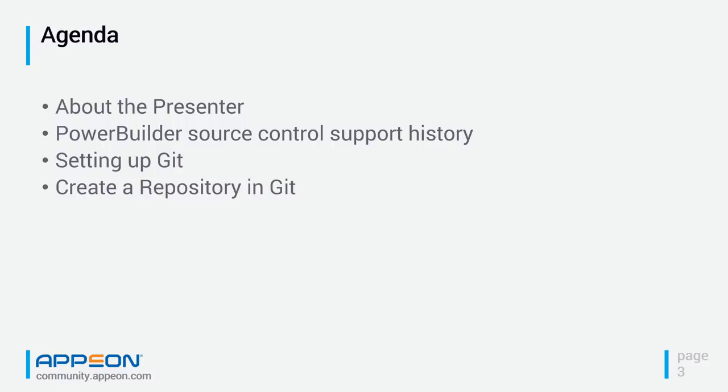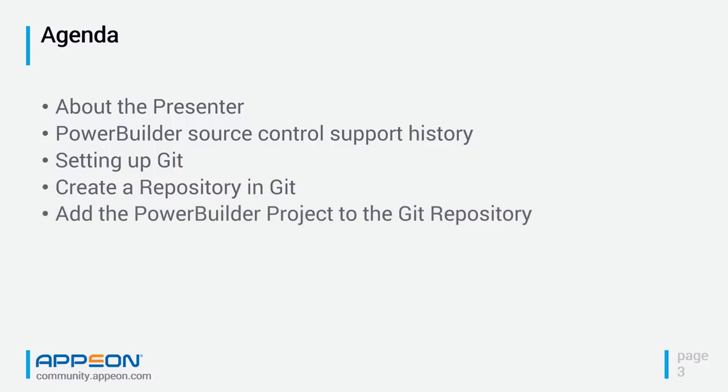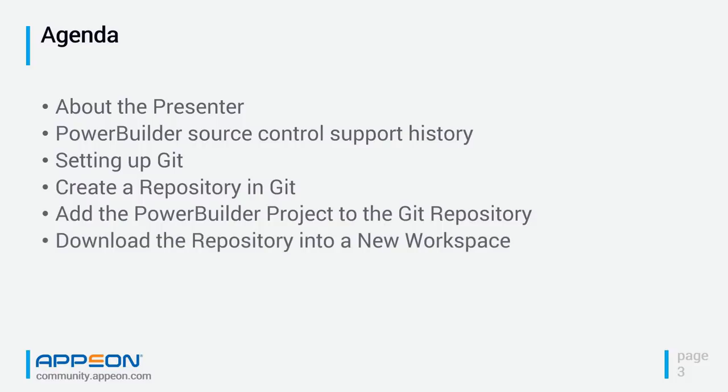We are going to create a repository in Git and add the PowerBuilder project to it. Then we'll examine what is really a new feature in PowerBuilder 2017 R2 — the ability for a new developer to connect to a workspace, connect to the source code repository, and pull down everything they need to get started, including the workspace file and the pibbles, which was not possible under the old MSSCCI approach.